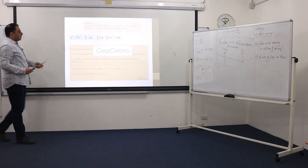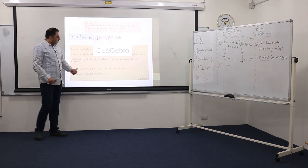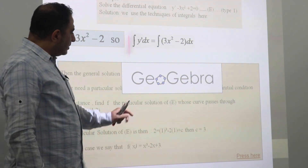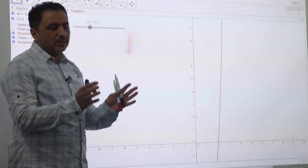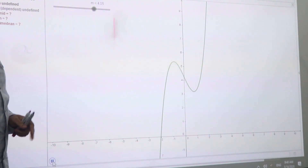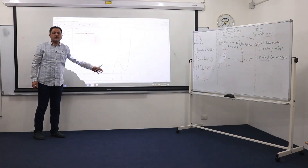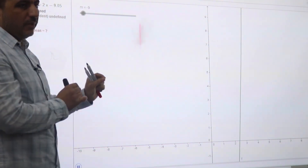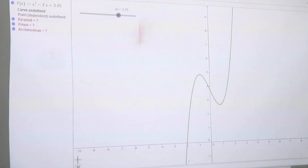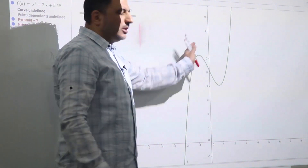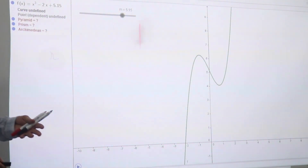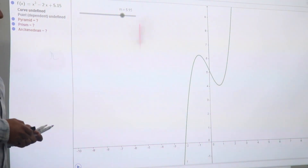Observe the curve of the function x³ - 2x + c. Here M represents the constant c. As M varies, the curve of the function varies, but it keeps the same shape. So this family of curves represents the general solution of equation E. If we need a particular solution, we give one piece of information — for example, a certain point that the curve passes through. Whenever you need to find a particular solution, we need information: it could be a point or a tangent to that curve.